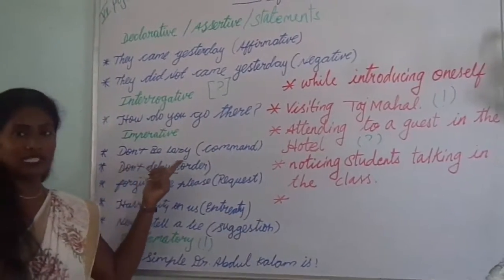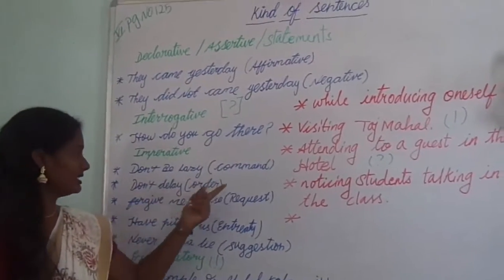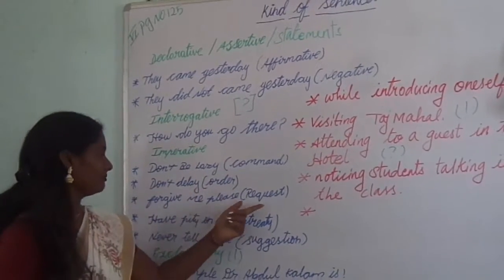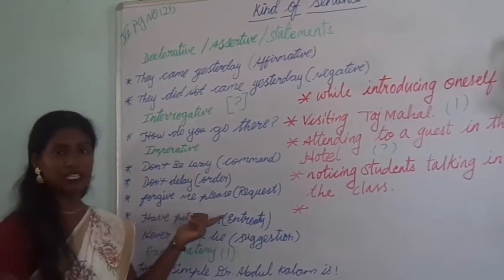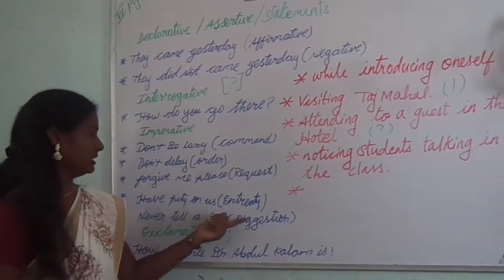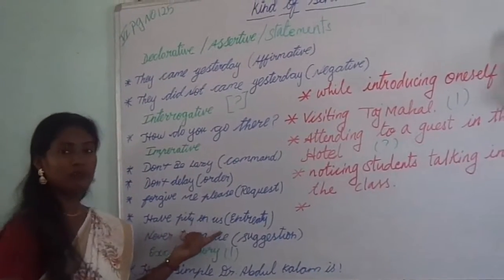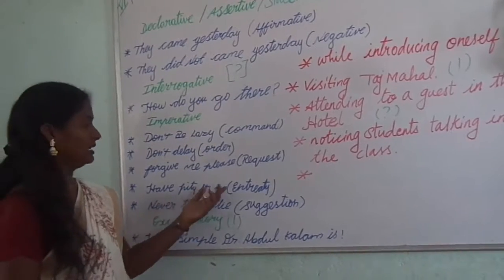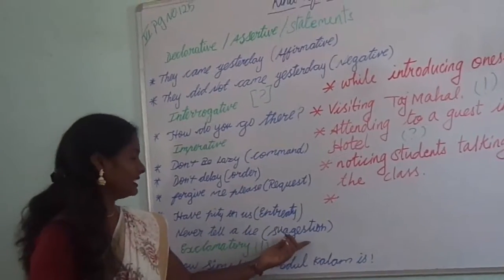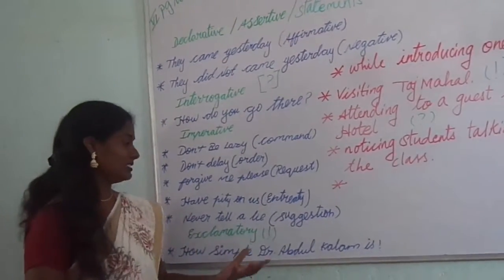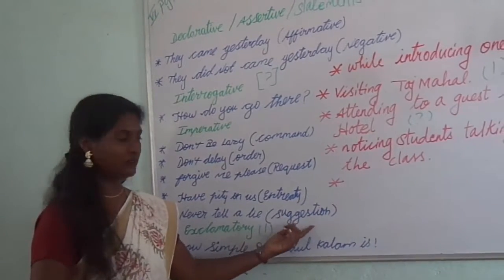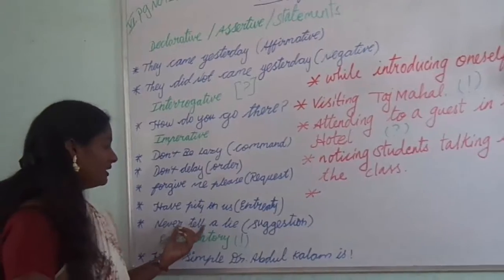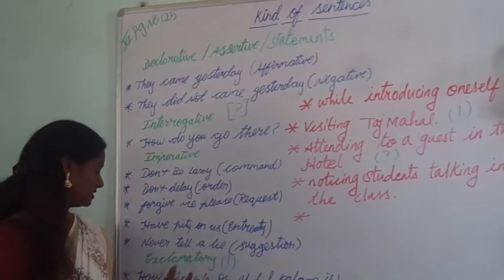For command, the example is 'Don't be lazy.' For ordering, 'Don't delay, don't come late.' For request, 'Forgive me please, I have made a mistake.' Then entreaty: 'Have pity on me — why can't you show some pity on me?' This is the type of entreaty. Then suggestion — giving a slight suggestion or advice. For example, 'Never tell a lie' is a suggestion.